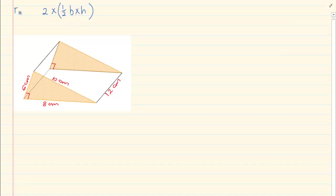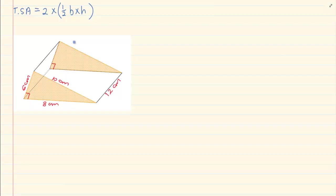So the total surface area is going to equal the two triangles. Then we have a rectangle — can you see this rectangle? We know that the opposite sides of a rectangle are equal, which means that side is going to be 12.